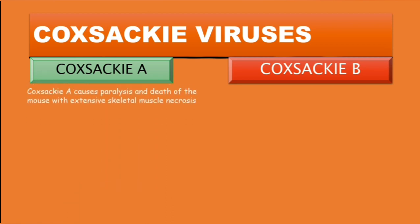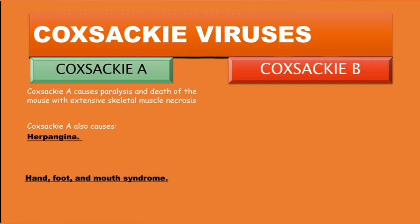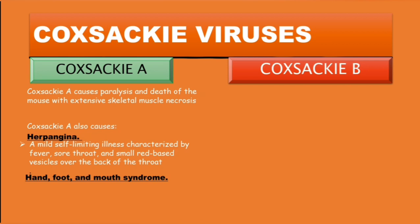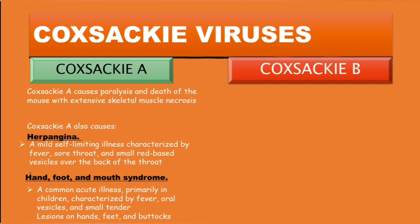Coxsackie A viruses cause paralysis and death in the mouse with extensive skeletal muscle necrosis. In humans they also cause herpangina and hand-foot-and-mouth syndrome. Herpangina is a mild self-limiting illness characterized by fever, sore throat, and red-based vesicles over the back of the throat. Hand-foot-and-mouth syndrome is a common acute illness primarily in children, characterized by fever, oral vesicles, and small tender lesions on hands, feet, and buttocks.